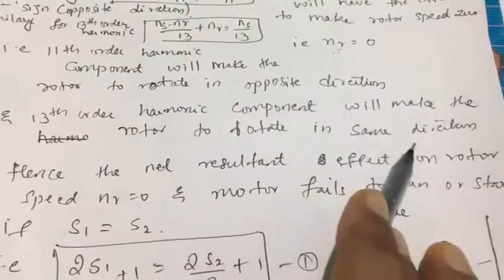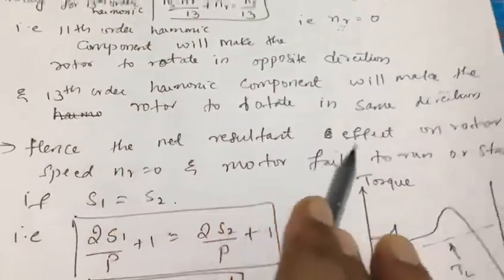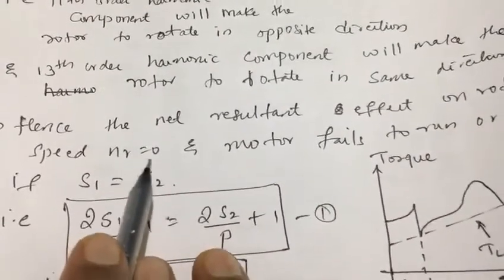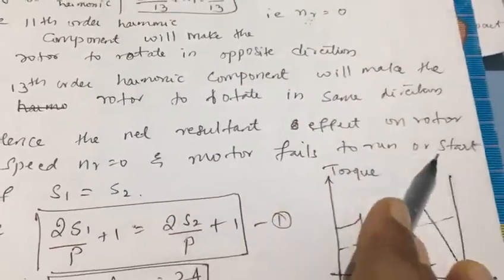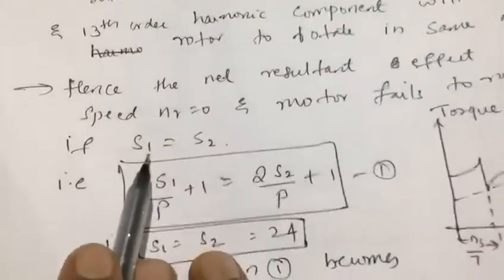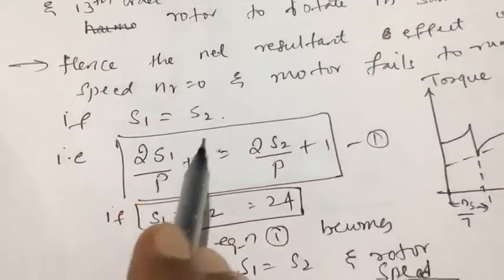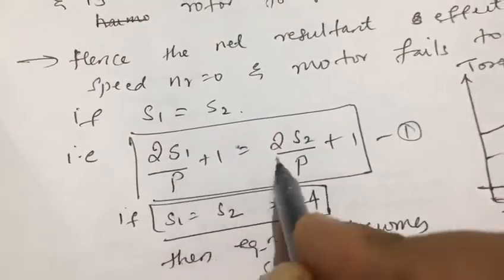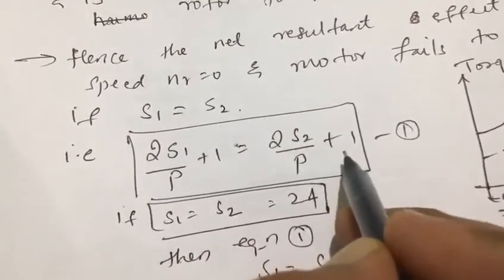make the rotor rotate in the same direction. Hence, the net resultant effect on motor speed (nr, rotor speed) will be zero and the motor fails to run or start if stator slots s1 equals s2, which means the condition for the order of frequency 2s1/p + 1 equals 2s2/p + 1.